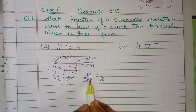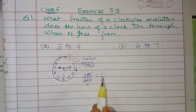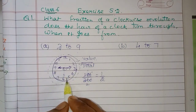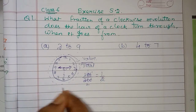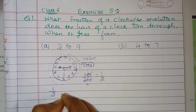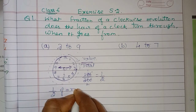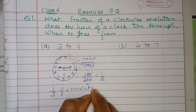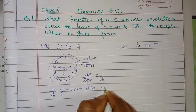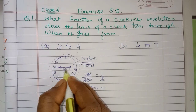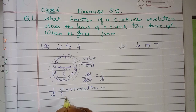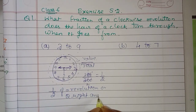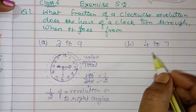Now we will convert the fraction. In our hand, we move on. We will do half — 1 by 2 — half a revolution. We will do two right angles. So the answer is half a revolution and two right angles.